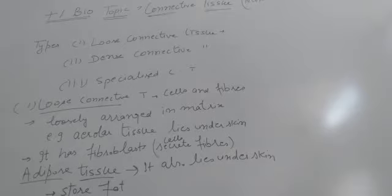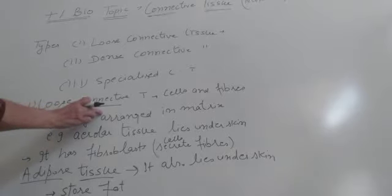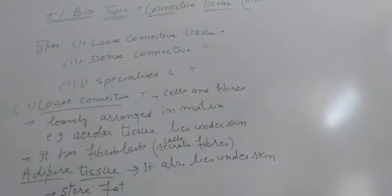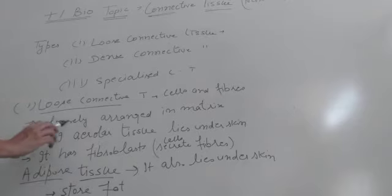That is loose connective tissue. Now, loose connective tissue - cells and fibers are loosely arranged. That's why it's called loose connective tissue. The cells and fibers are not very tightly packed. They are loosely arranged.